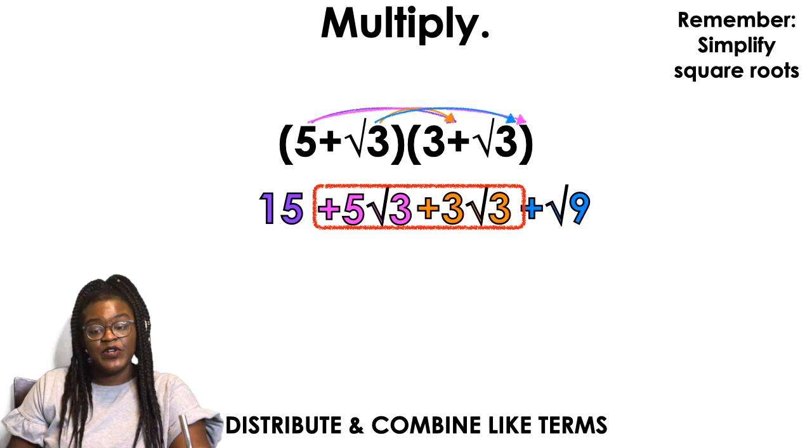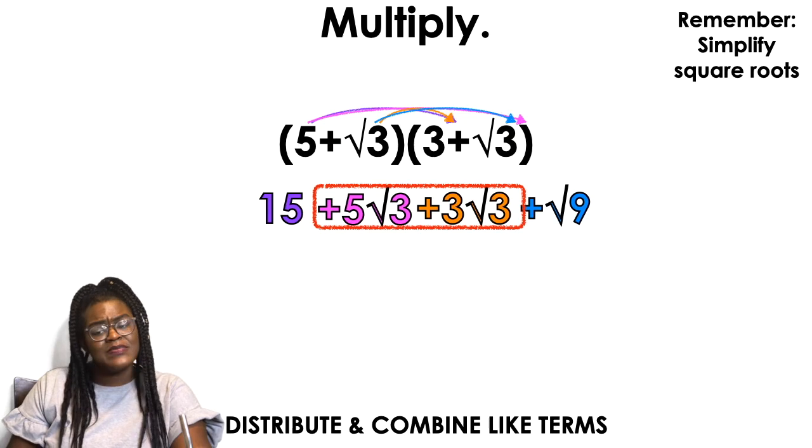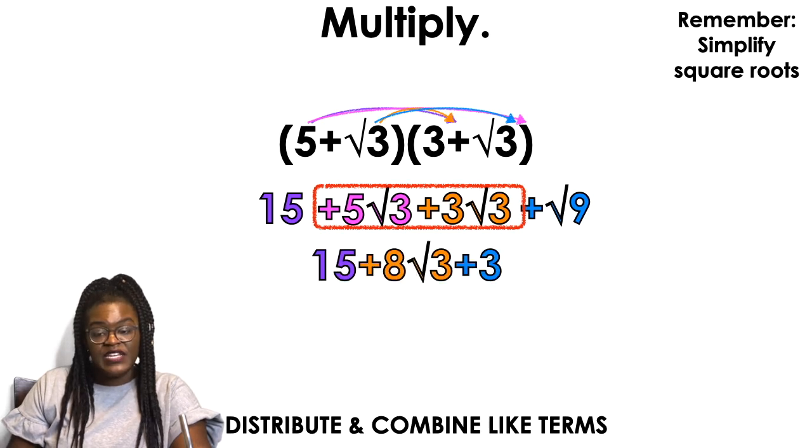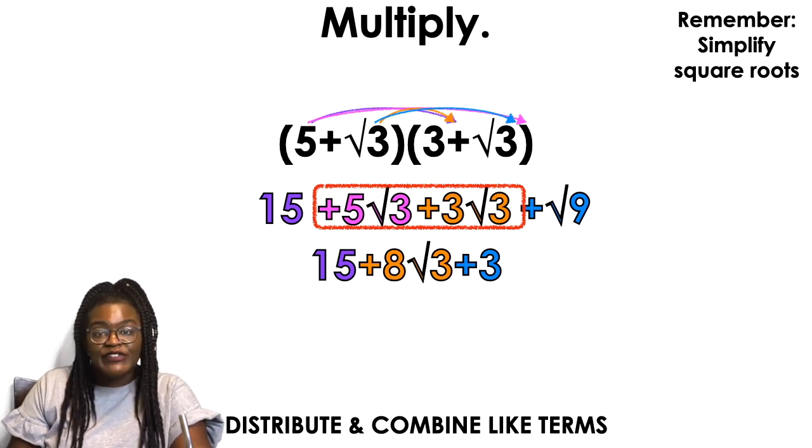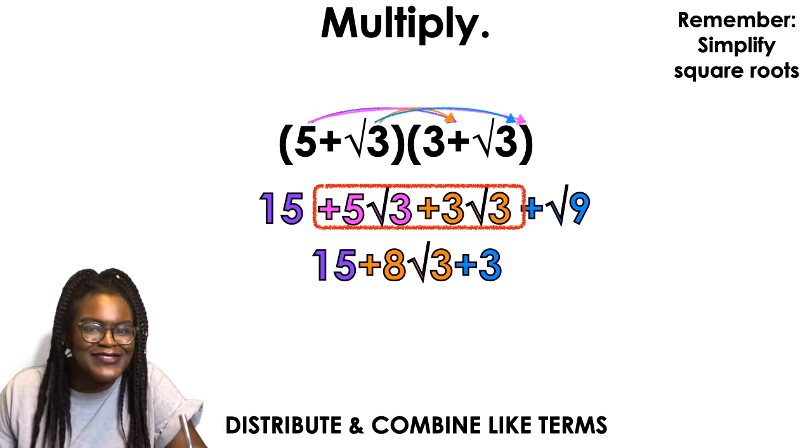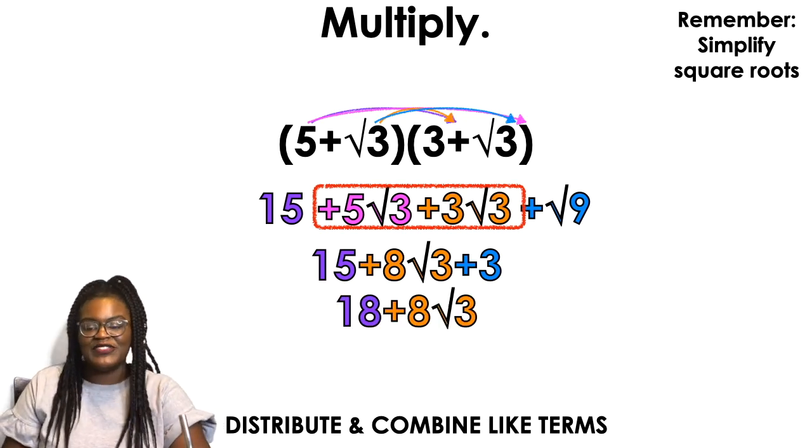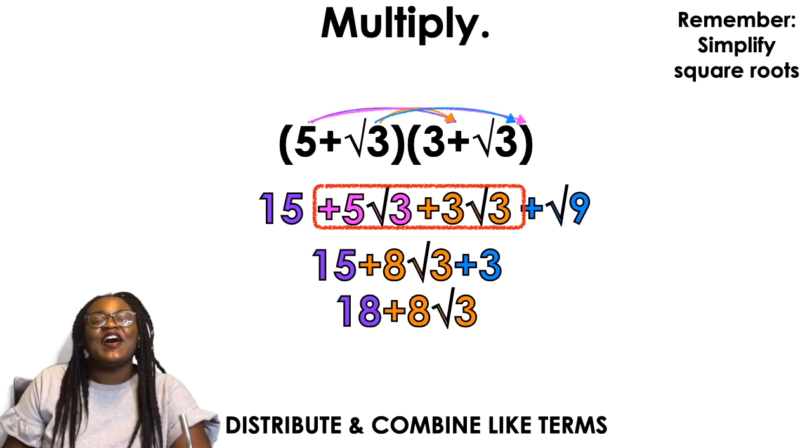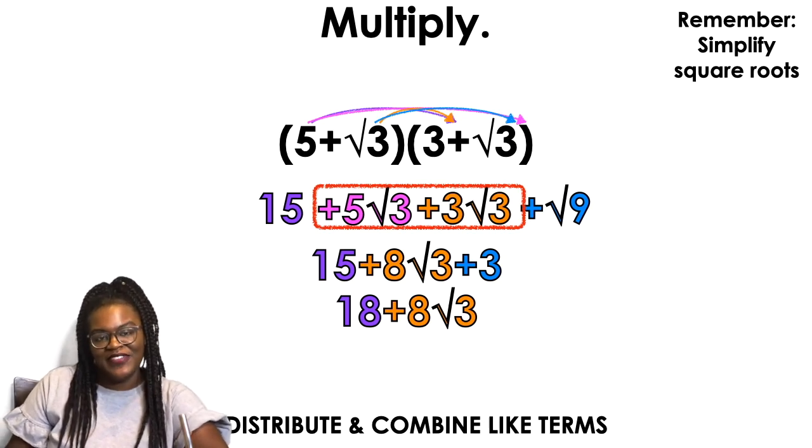We're going to pay attention to the middle because those are like terms, they are both radical 3s. And because they are like terms, I'm going to go ahead and combine them. So I'm going to do 15. I'm going to simplify your square roots. 15 plus 8 radical 3 plus 3. Where did that 3 come from? Radical 9. The square root of 9 is 3. So I can now continue to combine like terms. 18 plus 3, I mean 5 plus, I gave you the answer. Oh my gosh. 15 plus 3 is 18 plus 8 square root of 3 should be my final answer for that one.